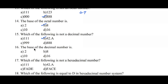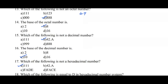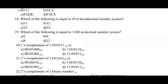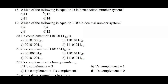Question number sixteen: the base of a decimal number is — options A) 2, B) 8, C) 10, D) 16. Decimal represents base 10, so option C is the right answer. Question number seventeen: which of the following is not a hexadecimal number? Options: A) 1111, B) 42.A, C) FADE, D) FACE. Option A, 1111, is a binary number and not hexadecimal, so option A is the right answer.